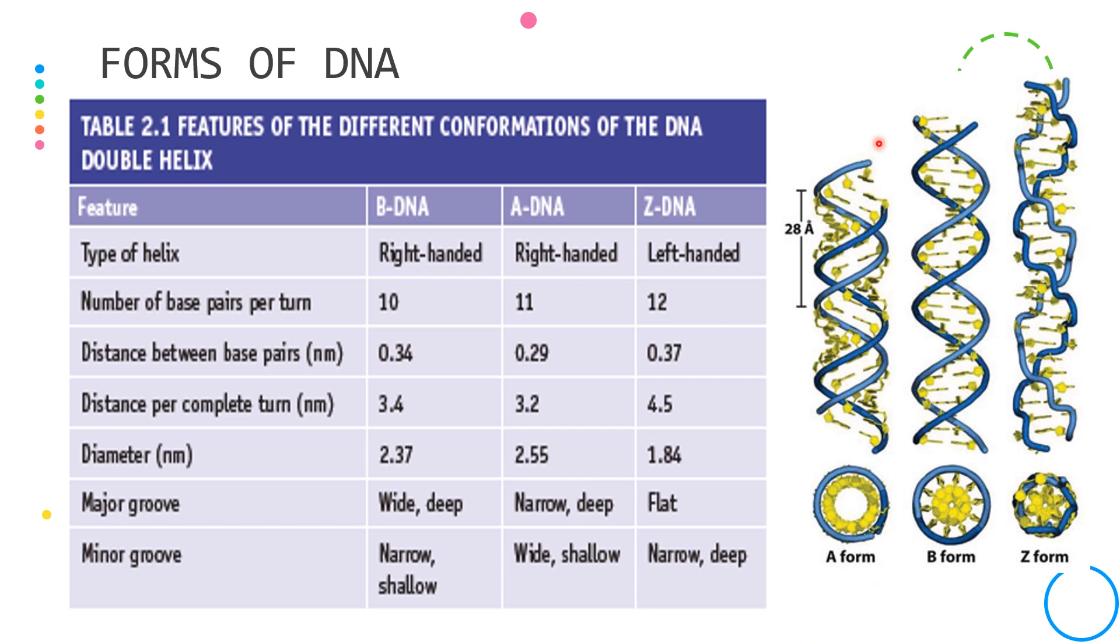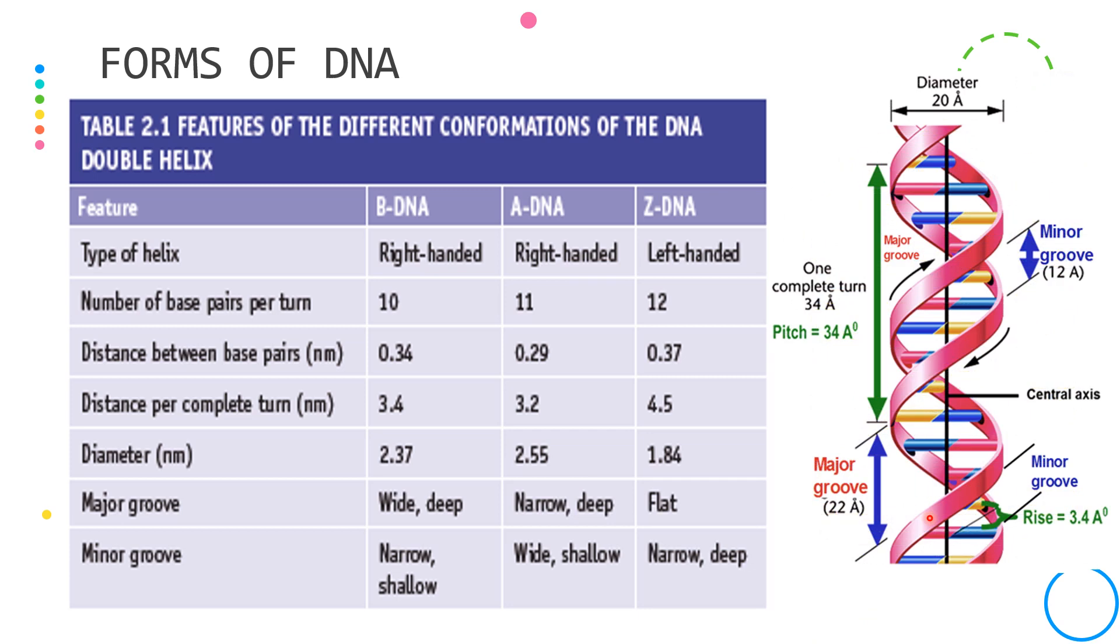Both A form and B form have different types of grooves. We have the minor groove and the major groove.